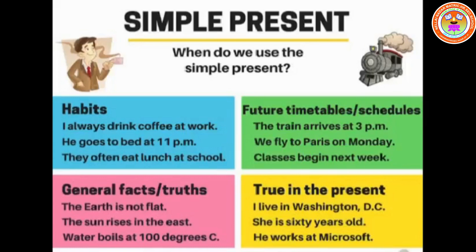When do we use simple present tense? Simple present tense is used to describe a habitual action, general facts and truths, future timetables and schedules, and things true in the present. Habitual actions talk about the things that we do regularly. For example, 'I always drink coffee at work.' 'He goes to bed at 11 p.m.' 'They often eat lunch at school.' These are all regular habitual actions.